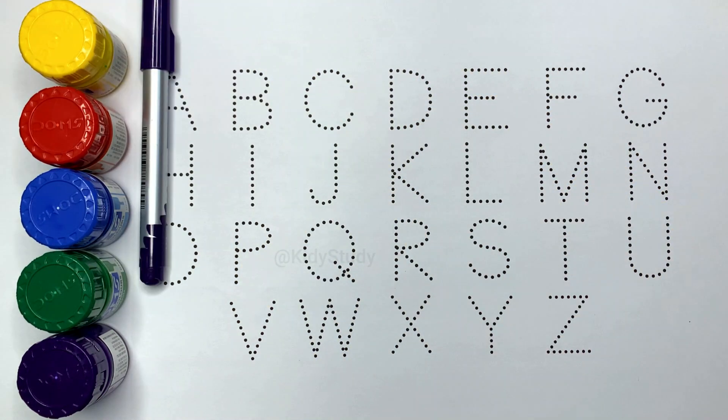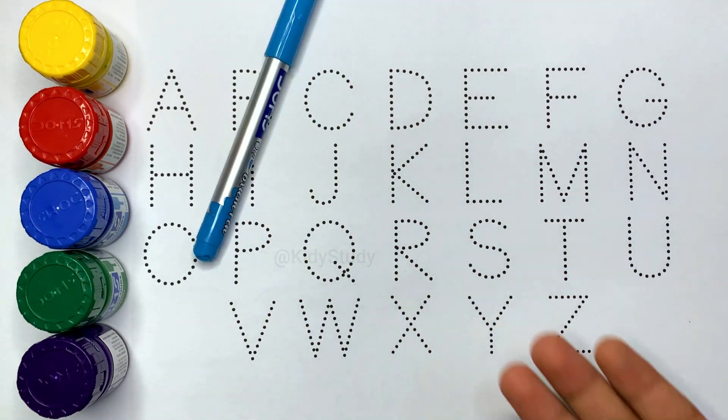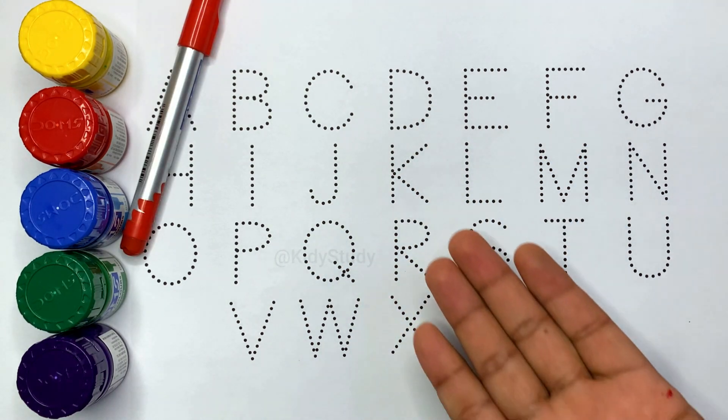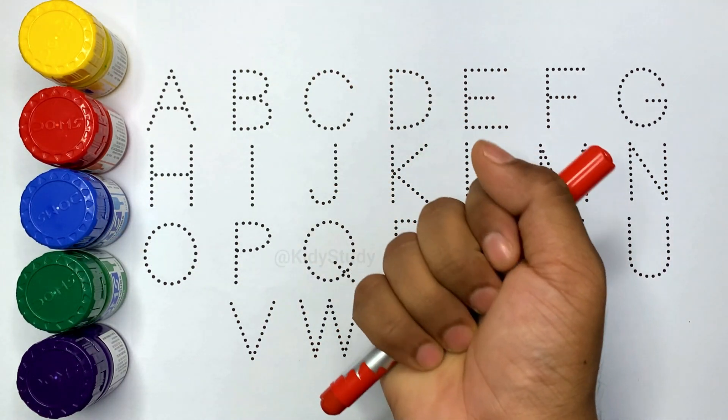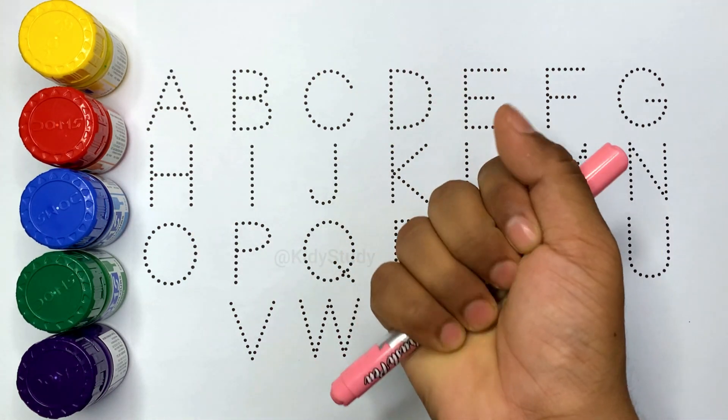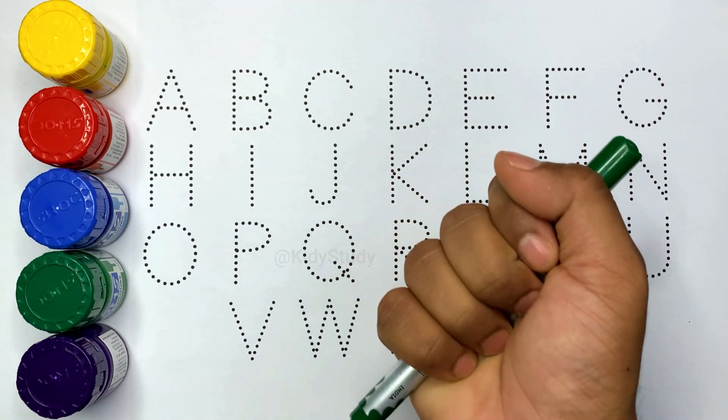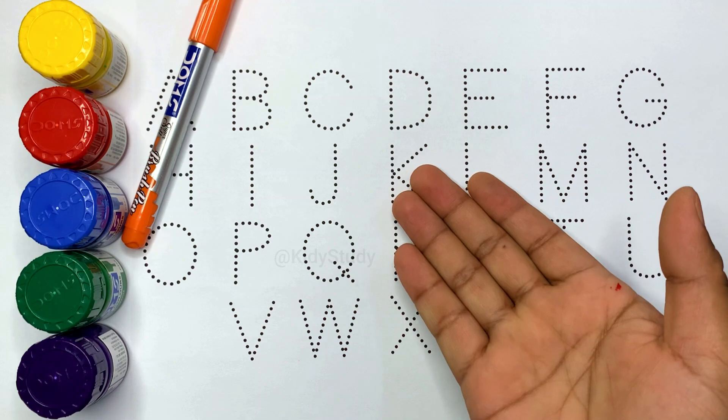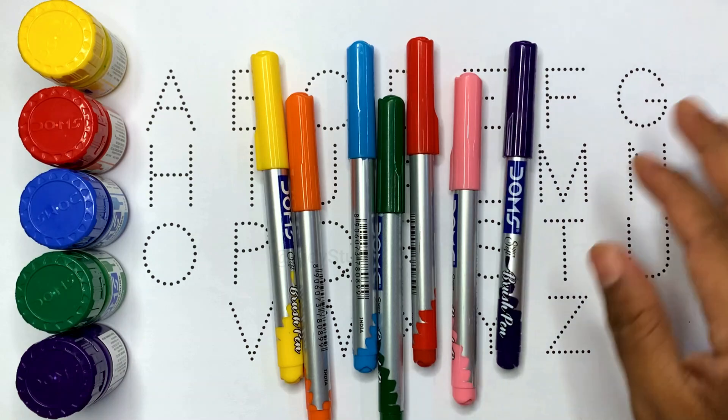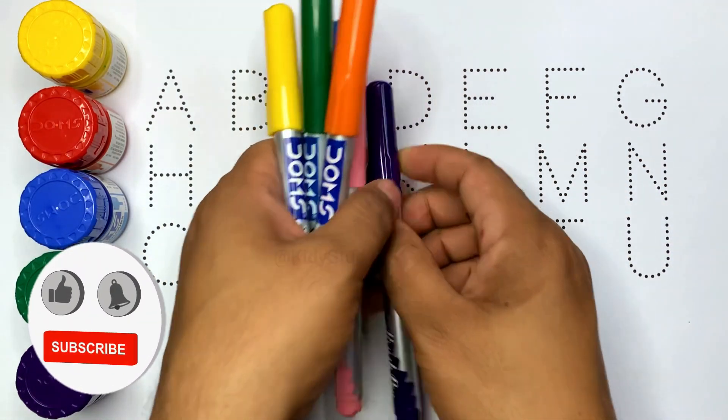Yellow color, violet color, sky blue color, red color, light pink color, green color, orange color. Hello kids, welcome to a new video. Kids, today we will learn the alphabet.